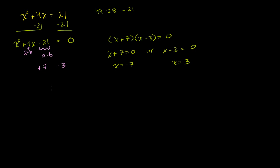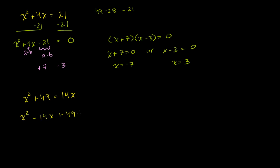Let's say I have x squared plus 49 is equal to 14x. Whenever you see anything like this, get all of your terms on one side of the equation and get a 0 on the other side — that's the best way to solve a quadratic equation. So let's subtract 14x from both sides: x squared minus 14x plus 49 is equal to 0.